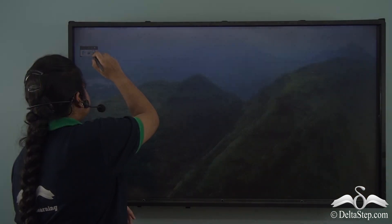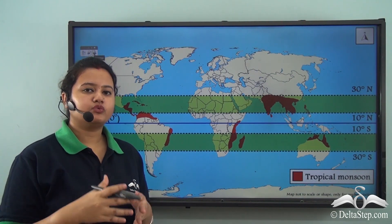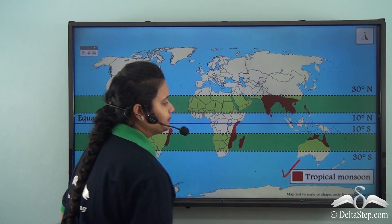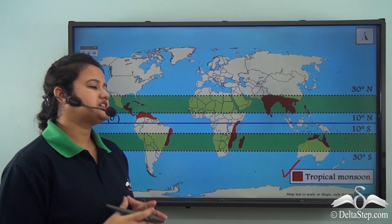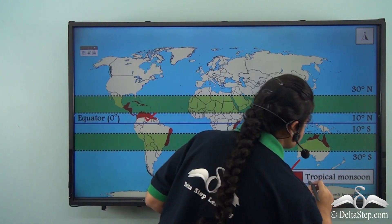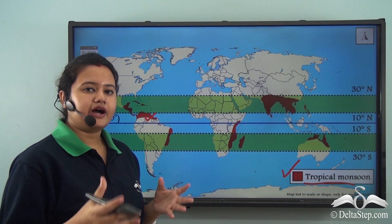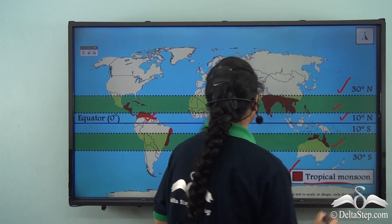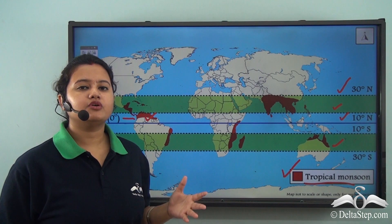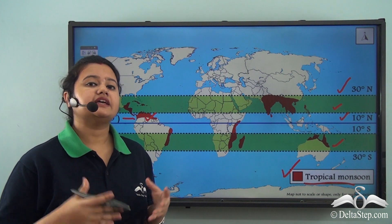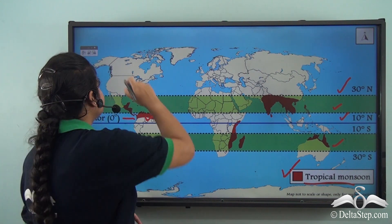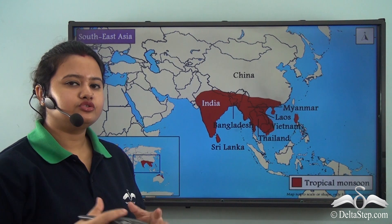The natural region of the world where monsoon is a predominant season is known as the tropical monsoon. In this world map, the regions marked in red depict the tropical monsoon region. As we can see, this biome spreads from 10 to 30 degrees north and south of the equator, so the tropical monsoon region exists on both sides of the equator.